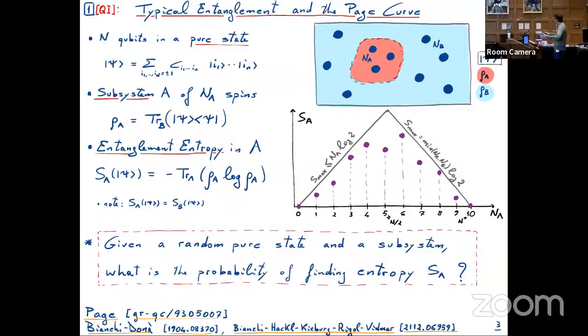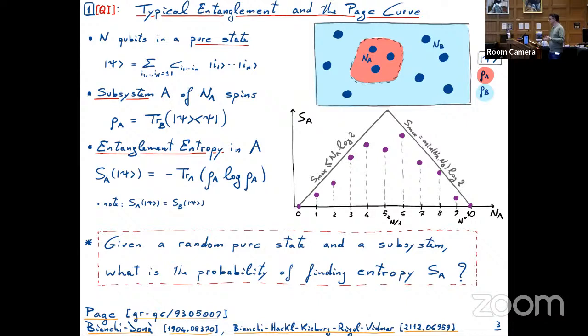What Don Page answered in his classic paper on the average entropy of a subsystem is: what is the average? One can ask much more — what's the variance? Is that value of the entropy typical? In the sense that, if I keep sampling, do I get always something close enough to the average? What is the full probability distribution and its moments? Something we studied together with Pietro Donat, but much more.